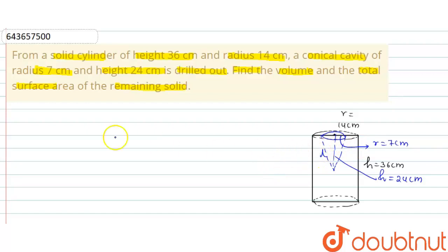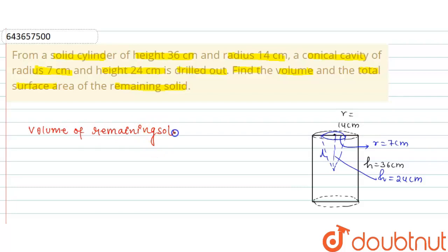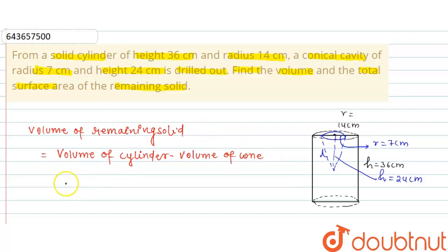Mark this length as radius and this as slant height. The volume of the remaining solid is equal to volume of cylinder minus volume of cone. The formula of volume of cylinder is πr²h and volume of cone is (1/3)πr²h.